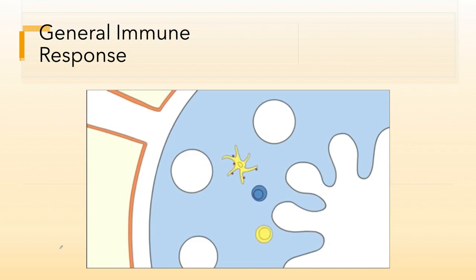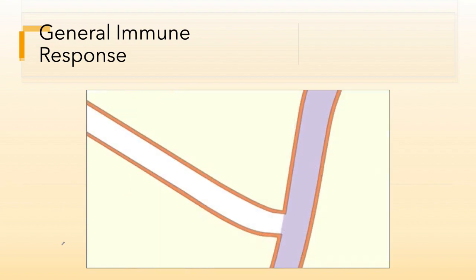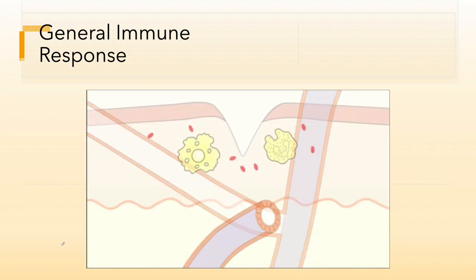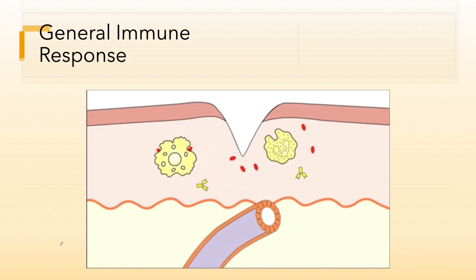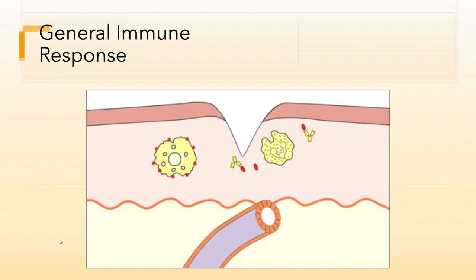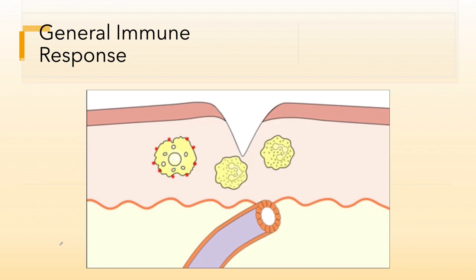In the lymph node, T-cells are activated by antigen presented by the dendritic cells, and in turn activate these cells to secrete antibodies. Effector T-cells and antibody molecules return to the circulation. They leave the circulation again at the site of infection, where inflammatory mediators have induced changes in the blood vessel endothelium. CD4 T-cells activate macrophages to become more cytotoxic, while antibody recruits complement to lyse bacteria directly and to opsonize them, enhancing their uptake by phagocytes. In the case of a viral infection, activated CD8 T-cells would kill any infected cells present.